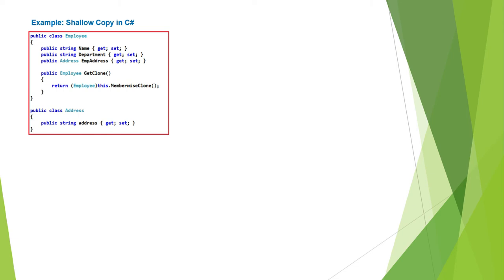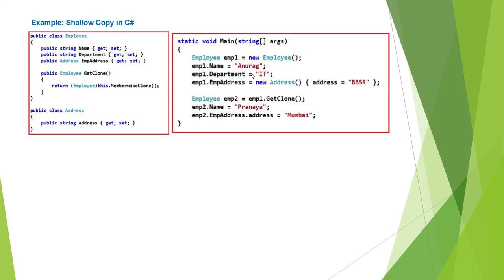The current instance is the object on which the GetClone method is called, and it returns that clone object to the caller. This is our client code. First, we are creating one employee object, emp1, and setting the Name, Department, and EmployeeAddress properties. Name and Department are value types, so we store the value directly. EmployeeAddress is a reference type, so we create an Address object and set the Address property. Then we create the second employee object, employee2, by calling the GetClone method on the employee1 instance.